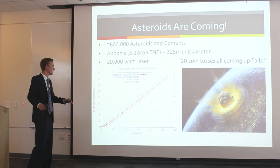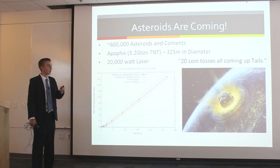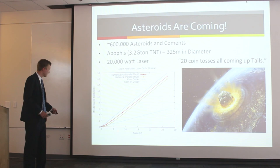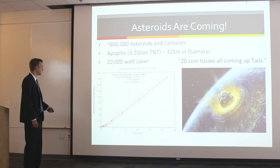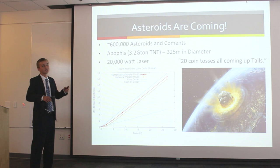We have run simulations to see how long we need to shoot a laser at Apophis in order to move it to at least two Earth radii away, which is what NASA says is the minimum safe distance. At five newtons of force, we achieve a missed distance of two radii, and that requires shooting for 15 years with a 20,000-watt laser. I was using a 40-watt laser, so you can get a sense of the scale.